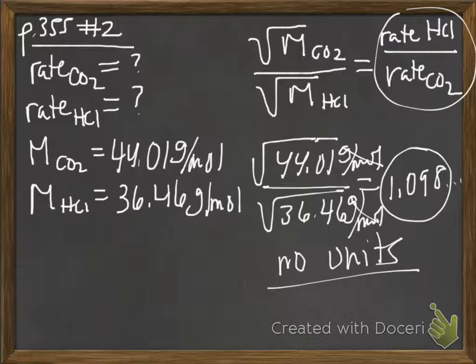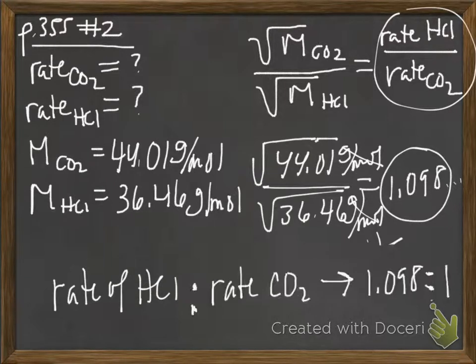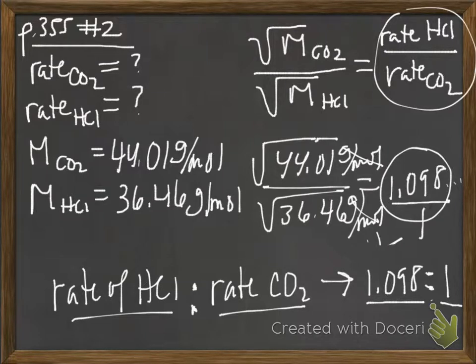So what we are saying is that the rate of HCl effusion to the rate of CO2 effusion is 1.098 to 1. That's our ratio. This has an invisible 1 underneath it.